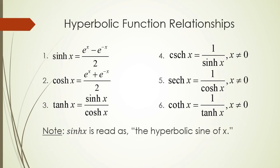The actual definitions or relationships for hyperbolic functions: hyperbolic sine by definition is e to the x minus e to the negative x, over 2. Hyperbolic cosine is e to the x plus e to the negative x, over 2. For the other hyperbolic functions, tangent is still sine over cosine, cosecant is still 1 over sine, secant is 1 over cosine, and cotangent is 1 over tangent — all hyperbolic. So sinh(x) or sinh x is read as the hyperbolic sine of x.